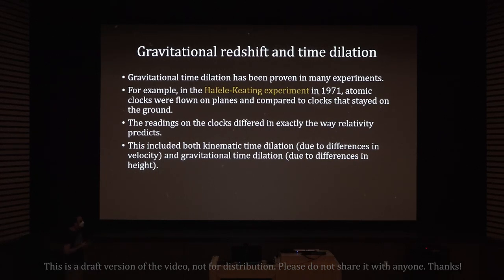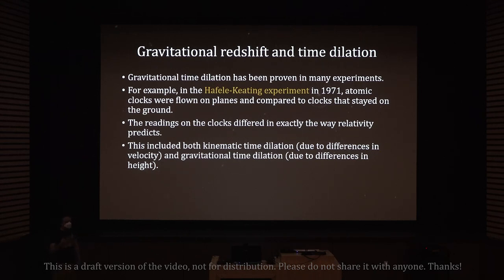Gravitational time dilation has been proven in many experiments. In the Hafele-Keating experiment in 1971, atomic clocks were flown on planes and compared to clocks that stayed on the ground. The readings differed in exactly the way relativity predicts, including both kinematic time dilation due to differences in velocity and gravitational time dilation due to differences in height between the ground and the planes.